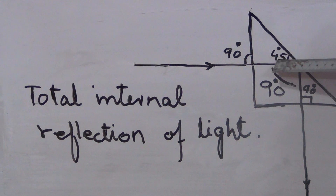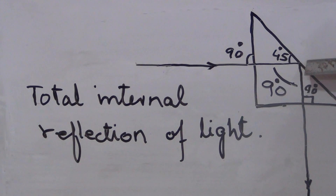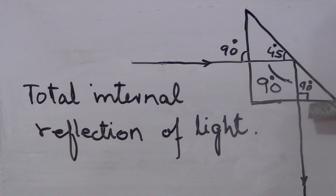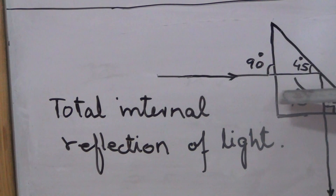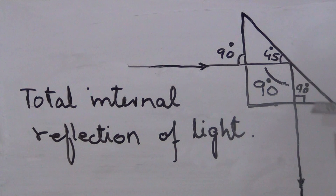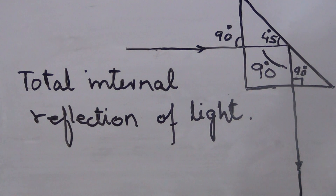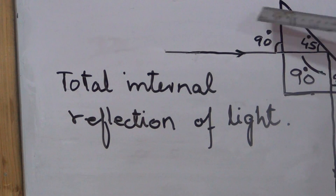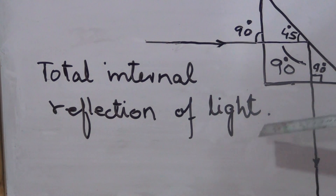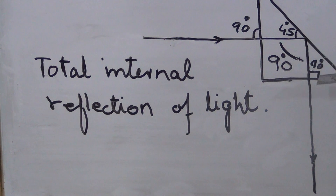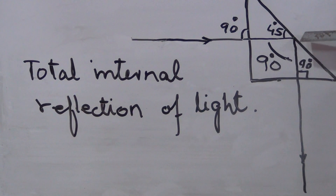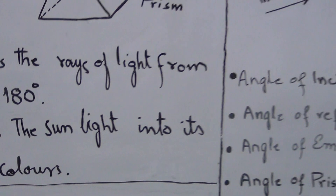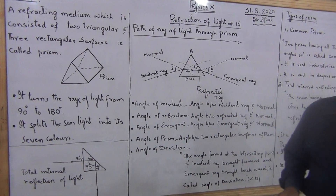Since 45 degrees is greater than the critical angle of 42 degrees, total internal reflection takes place. The ray of light is turned 90 degrees at that surface. If you add another prism, the ray is turned another 90 degrees, making a total turn of 180 degrees. This is why the prism is used in periscopes. The critical angle of glass is 42 degrees — when the angle exceeds this limit, reflection instead of refraction takes place. We will study total internal reflection in more detail in another chapter.